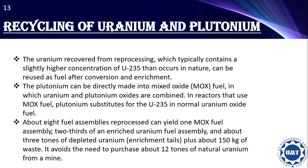Then recycling takes place. The uranium recovered from reprocessing contains a slightly higher concentration of uranium-235 than occurs in nature, and it can be used as fuel after conversion and enrichment. Plutonium can directly be made into mixed oxide (MOX) fuel, in which uranium and plutonium oxides are combined. In reactors that use MOX fuel, plutonium substitutes for uranium-235 in normal uranium oxide fuel. About 8 fuel assemblies reprocessed can yield 1 MOX fuel assembly, two-thirds of an enriched uranium fuel assembly, and about 3 tons of depleted uranium plus about 150 kg of waste. This avoids the need to purchase about 12 tons of natural uranium from a mine, which is one of the main advantages of this process.